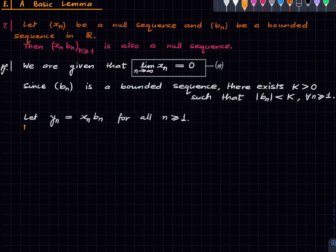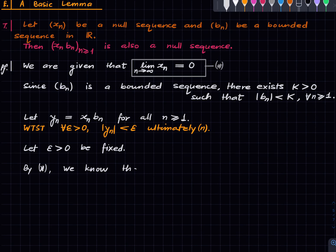Now, since bn is a bounded sequence, there exists a positive real capital K such that the absolute value of bn is less than or equal to K for all n. This follows immediately from the definition of a bounded sequence. Now define yn as the product of xn and bn for all n. We want to show that yn is a null sequence, which is to say that for all epsilon greater than zero, the absolute value of yn is less than epsilon ultimately. So this is our goal. To prove it, fix an epsilon, and we will end up showing this part. Once we do this, we will be done.